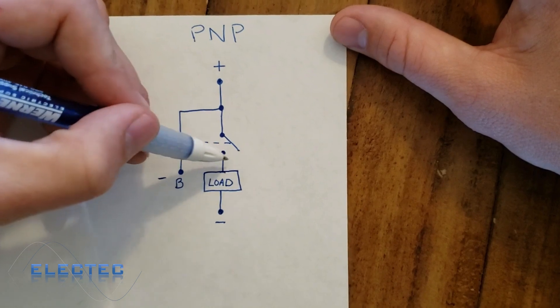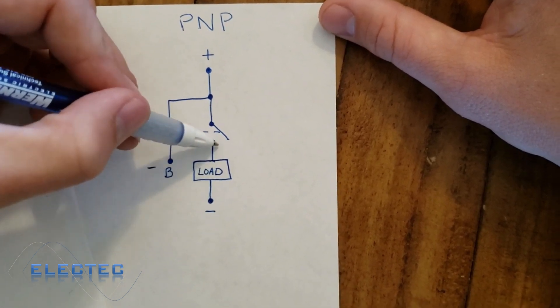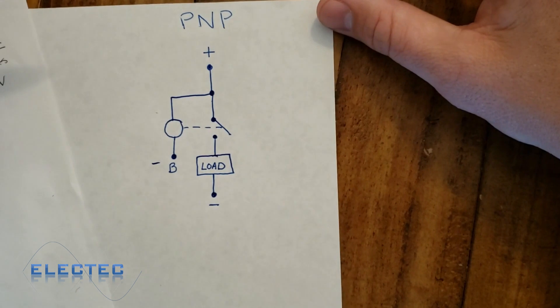When the switch closes, positive power is supplied to the positive leg of the load, and the load turns on.